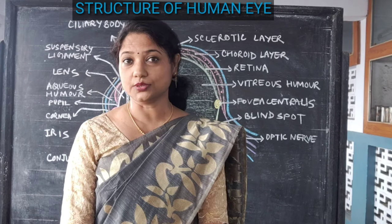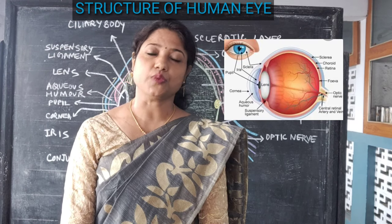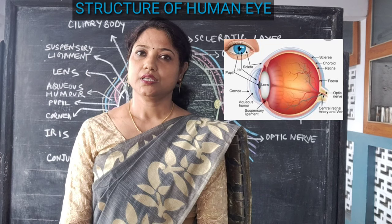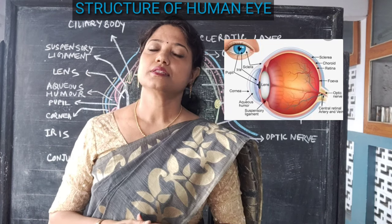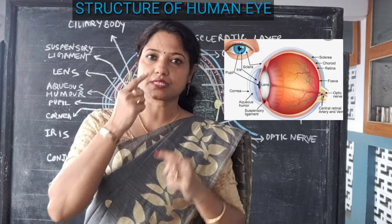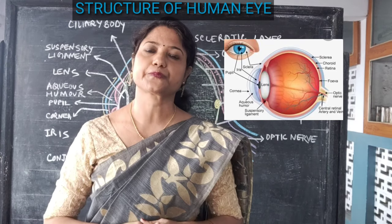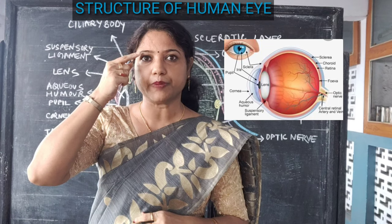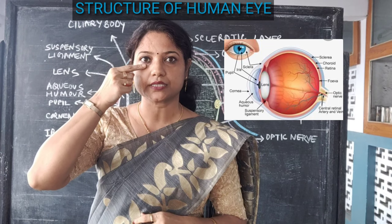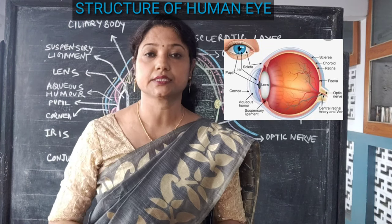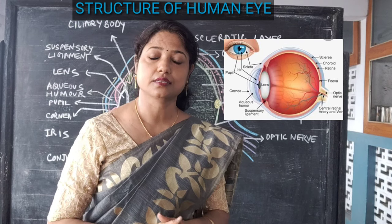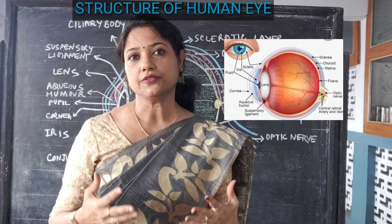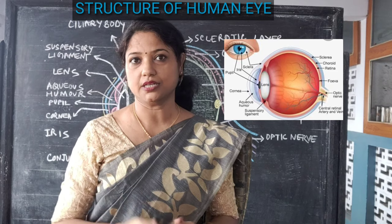As you all know, the eye is one of the sense organs. Externally, these eyes are grooved inside a socket-like head structure. Then we have two movable parts in our eye — the upper part and the lower part. They are called eyelids. They are protective in function and do not allow any foreign particles to enter our eye.